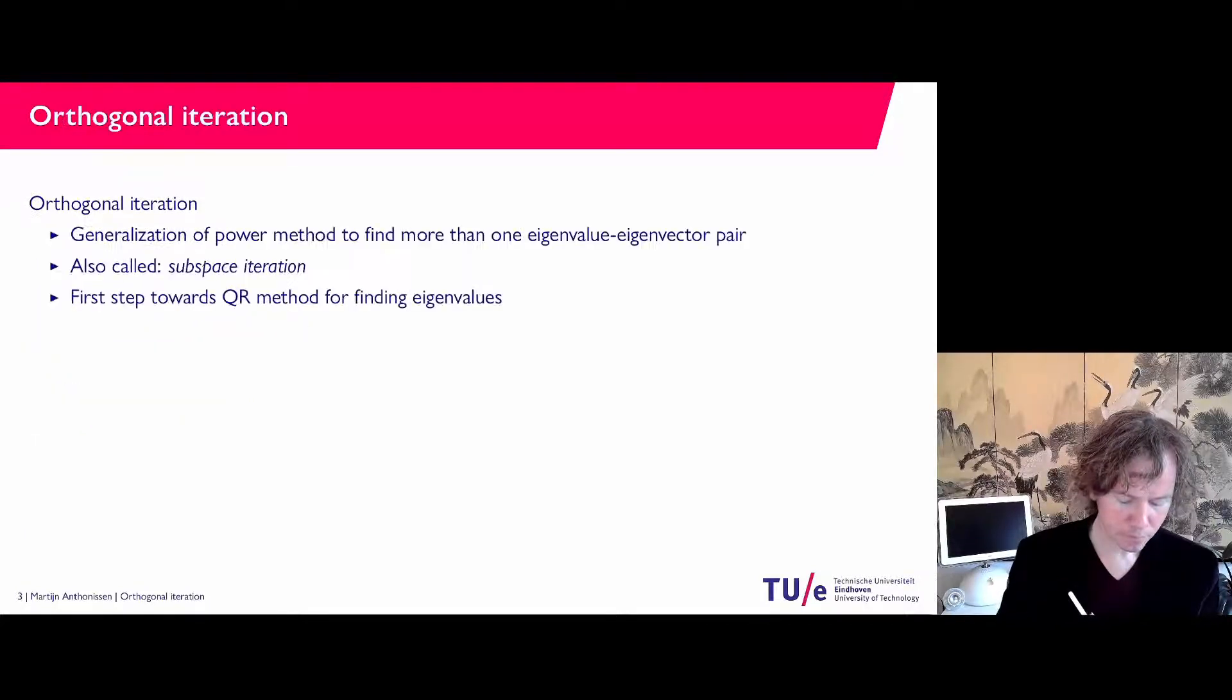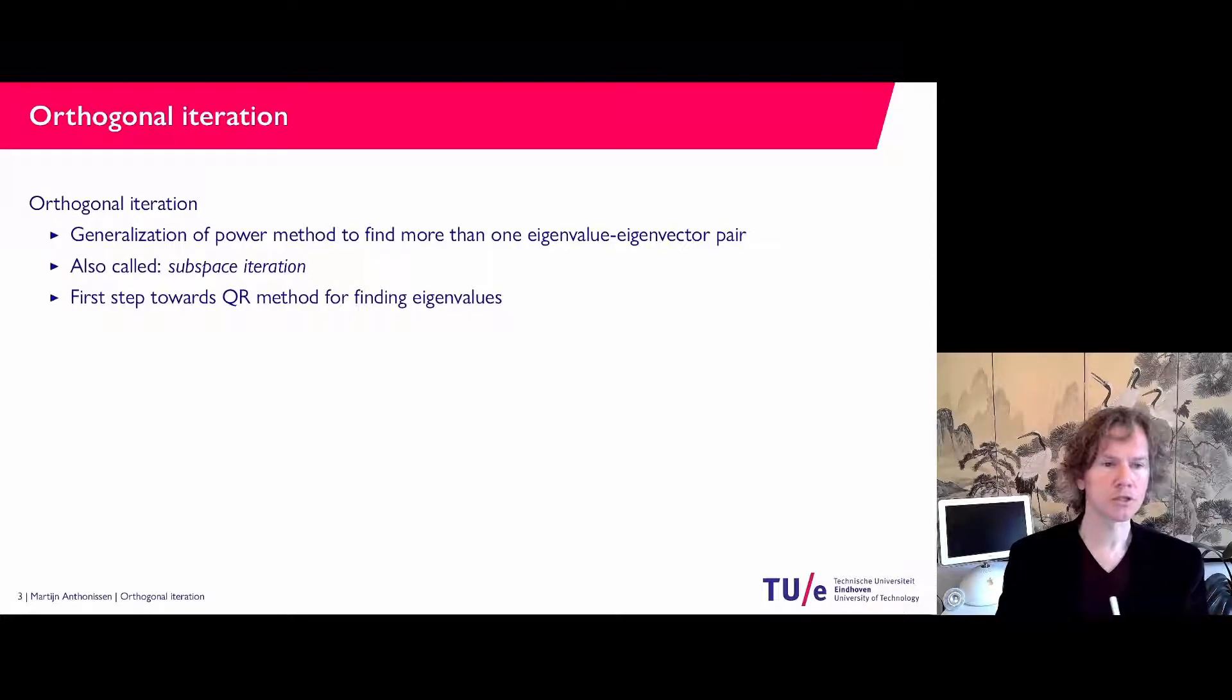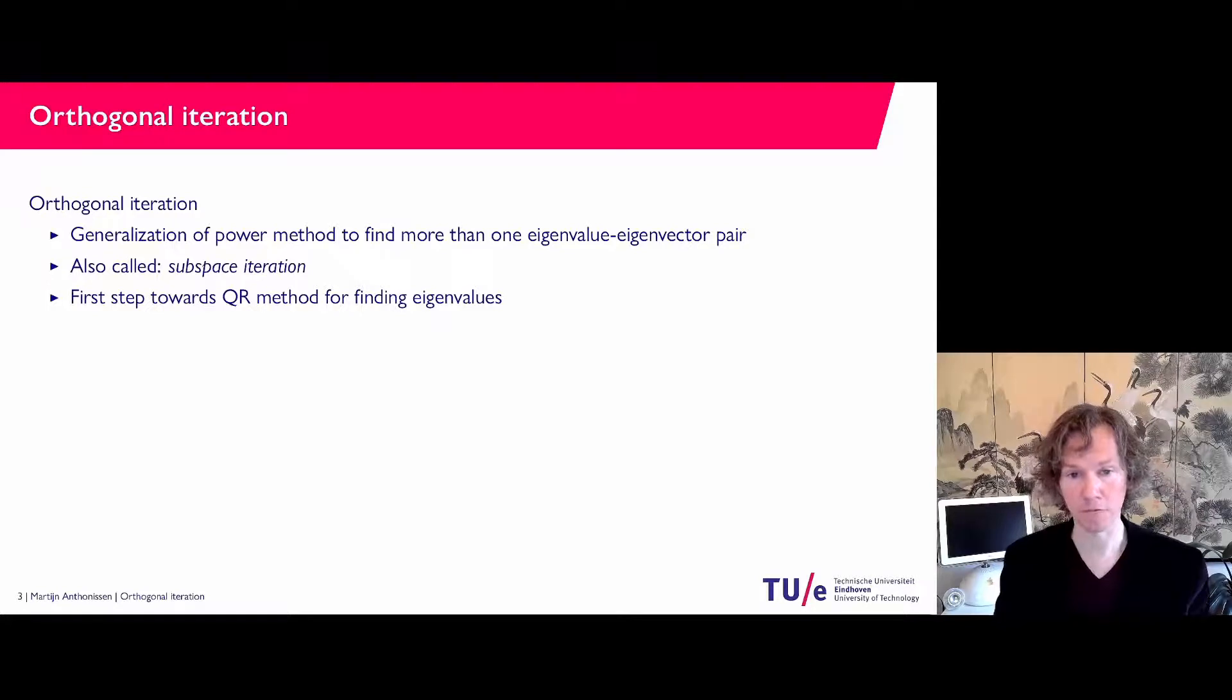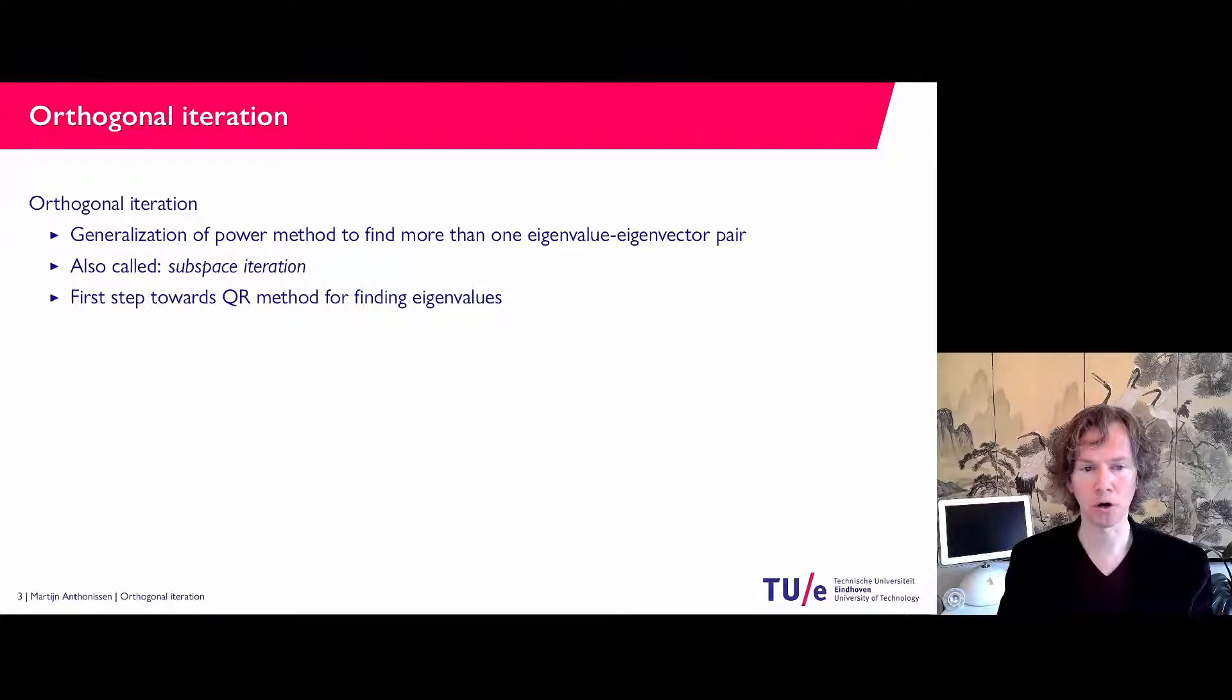Okay so let's see. Orthogonal iteration is a generalization of the power method if you would like to find not only lambda 1, the dominant eigenvalue, but a couple of eigenvalues or maybe all of the eigenvalues of a matrix. Subspace iteration is a different name for it and it's a first step towards the QR algorithm for finding eigenvalues numerically.